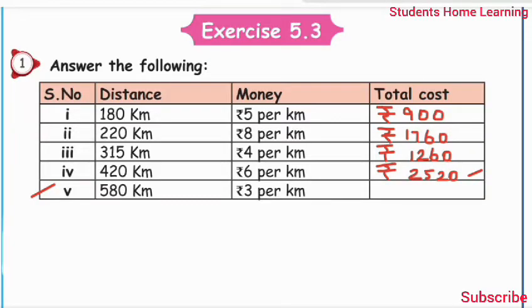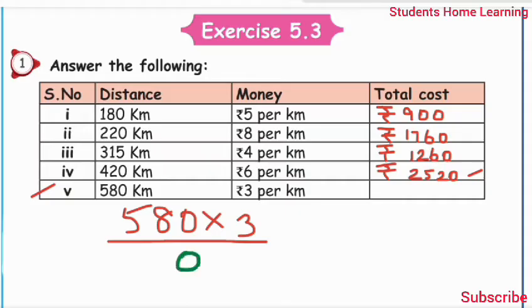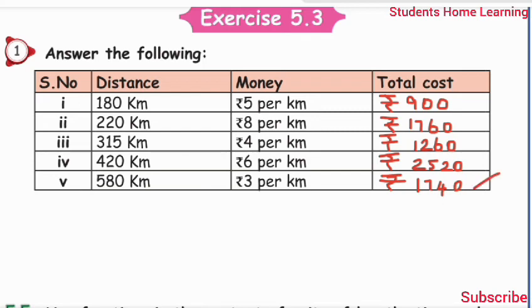Fifth sum: 580 km, rupees 3 per km. 580 multiply by 3: 3 times 0 is 0, 3 times 8 is 24, write 4, carry 2. 3 times 5 is 15, plus 2 is 17. Answer: rupees 1740.